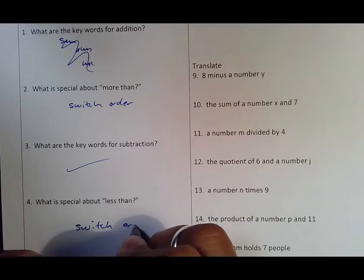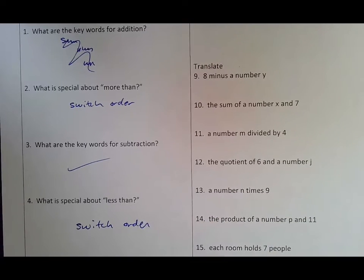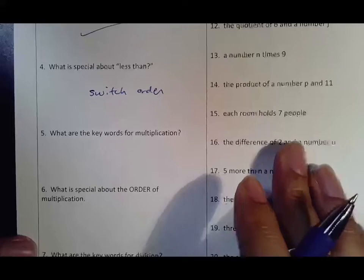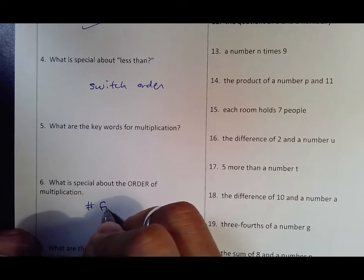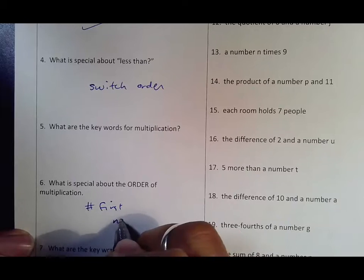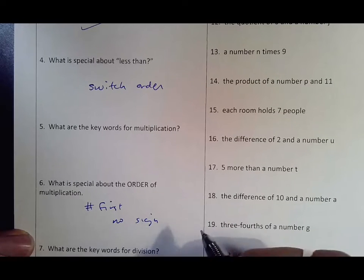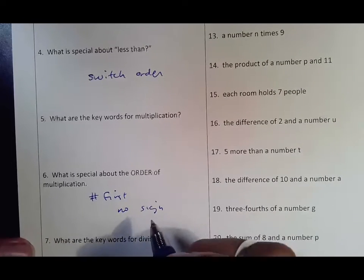Keywords for multiplication we talked about, but what's special about the order of multiplication is number first, no sign. So don't put an X, don't put a dot, don't put anything—you just put 6x or 5y or 2z or whatever it might be, nothing to attach.